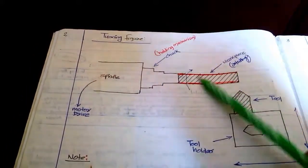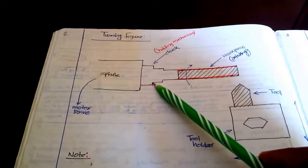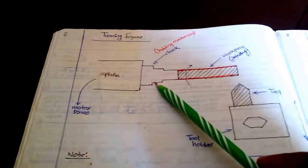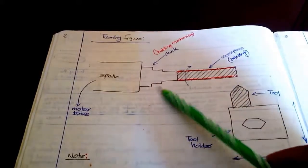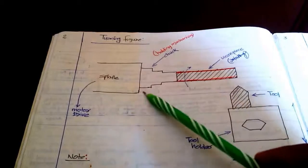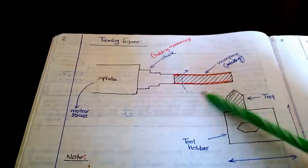And the workpiece is connected to the chuck. This is a holding mechanism. So the motor is rotating, as the motor is rotating the chuck is rotating, the workpiece is rotating continuously.